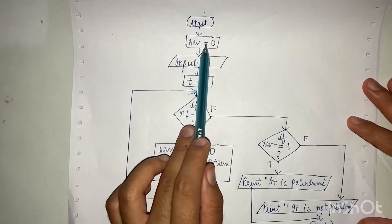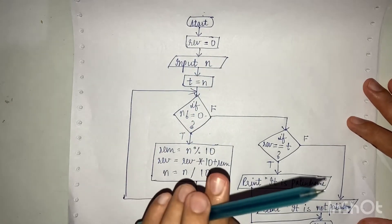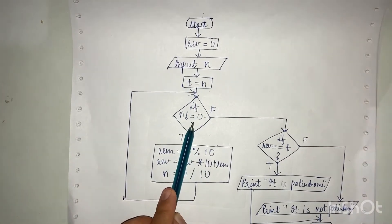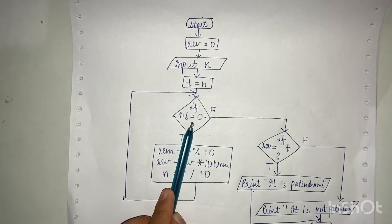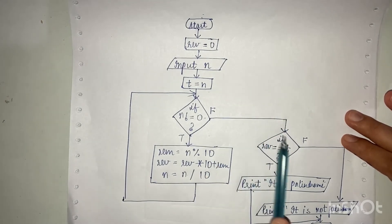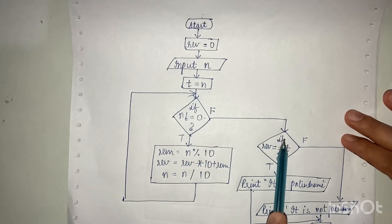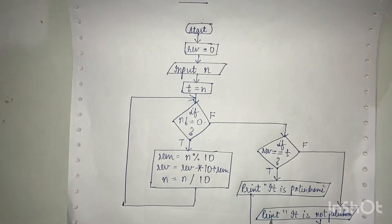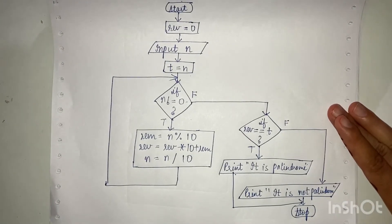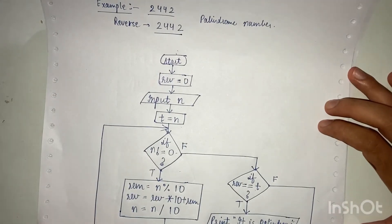We start, set our rev variable to 0, input a number from the user, and store that number in a temporary variable. Then we implement the logic to find the reverse of the number. After coming out of the loop, we compare the reverse with the original number stored in the temporary variable t. If they are equal we print that it is palindrome, otherwise we print that it is not palindrome.